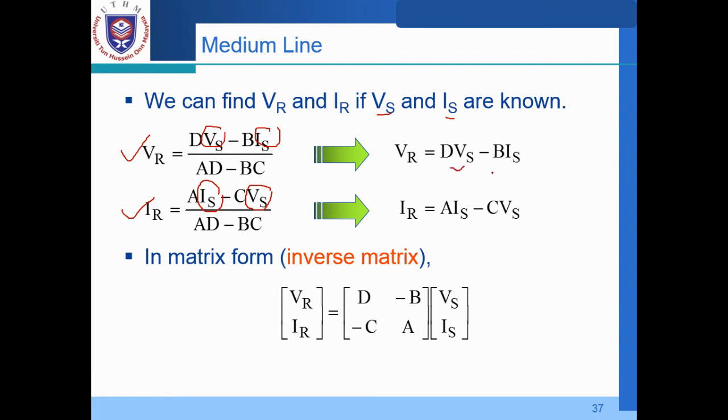So rearrange again. This is VR equal to DVS minus BIS. Because we know that this is the determinant of the matrix, which is equal to unity. This is equal to 1. So leaving VR equal to DVS minus BIS, IR equal to AIS minus CVS. So in matrix form, the inverse matrix. Because just now in the short line, we have everything in terms of VS. But this time around, we have the inverse matrix in terms of VR and also IR, the receiving end part. Previously we have seen everything is represented in terms of sending quantities VS. So we do have D minus B, second parameter. And then the third parameter, we have A and minus C over here. So make it inverse. And then we have D minus B. So negative C and also A for IS.